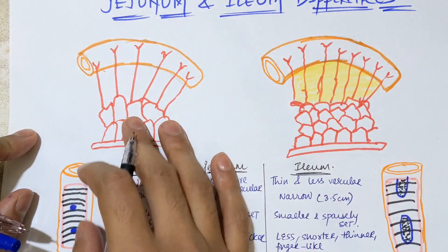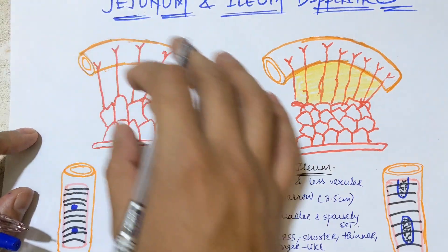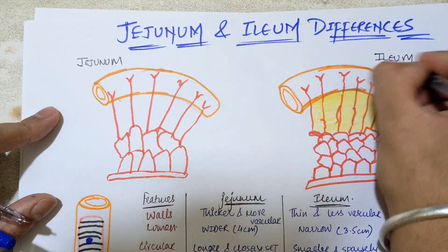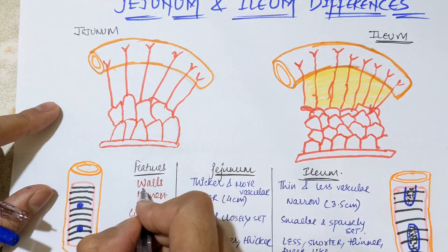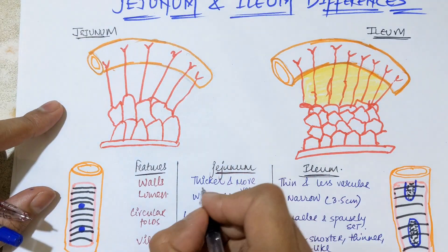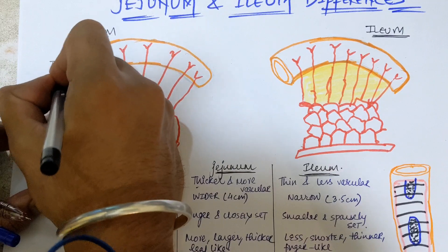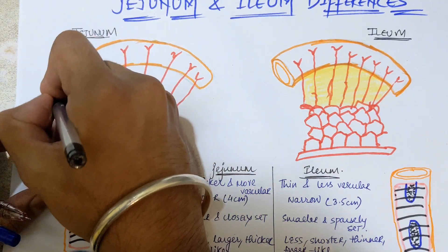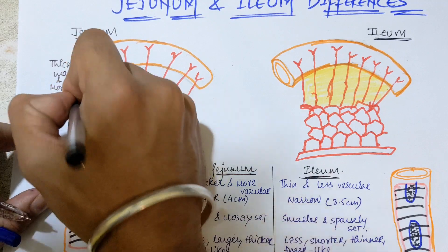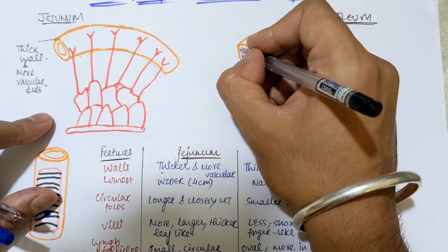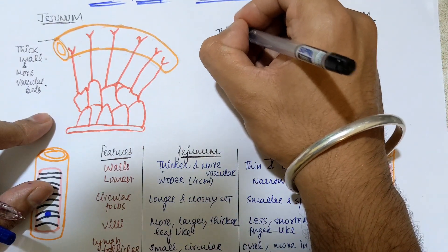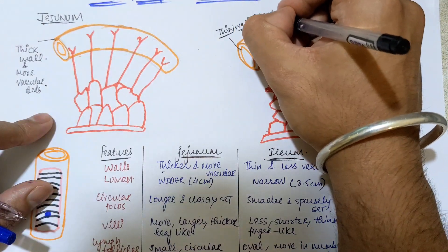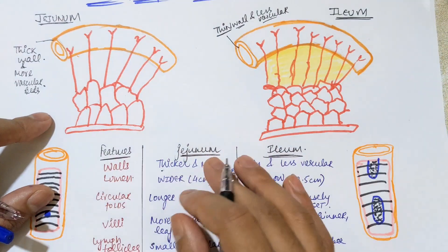You can see two diagrams — one is a cross section and one shows the basic arterial supply, with lumens and walls. This part is your jisnam and this one is your helium. The first difference is the walls. In the case of jisnam, we have thick walls — the walls are thicker and more vascular, with more vascular beds. In the case of helium, the wall is thin and has less vascular beds compared to jisnam.